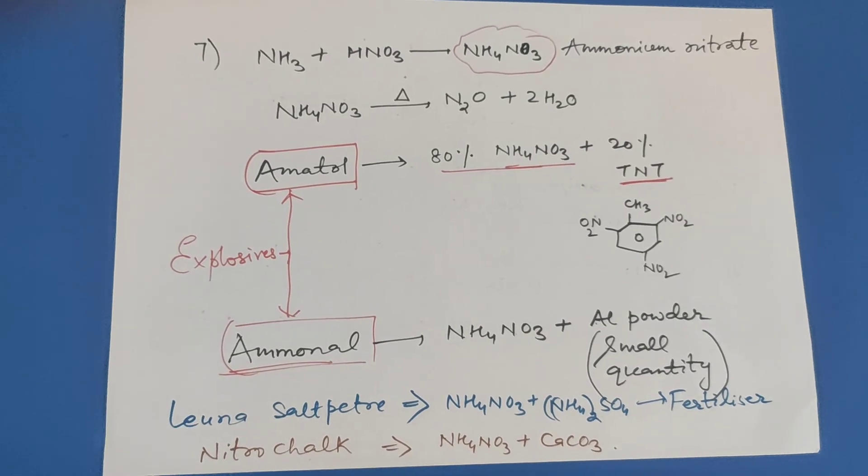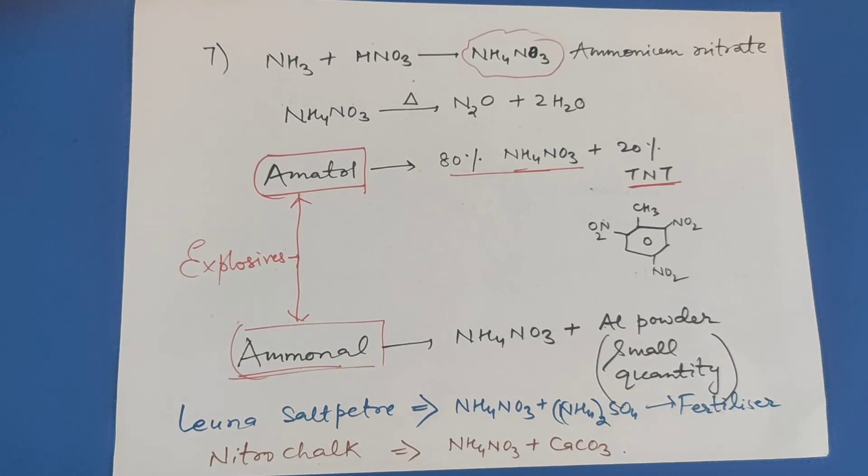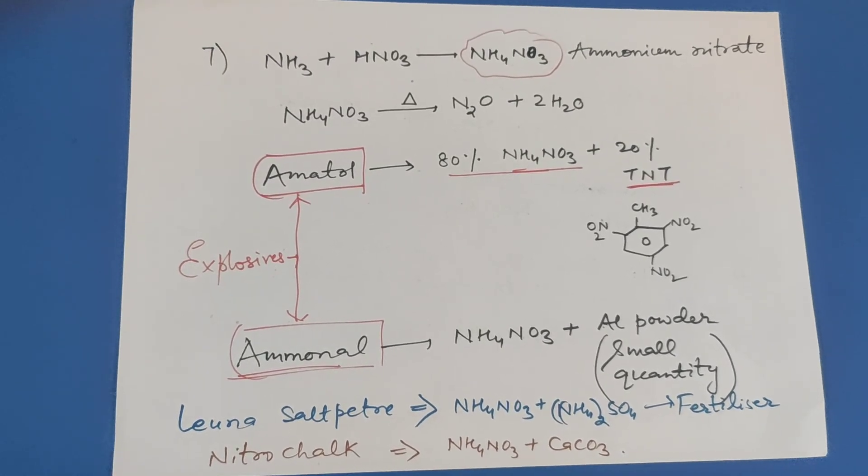Now Amatol and Ammonol. These are explosives. Amatol is 80% ammonium nitrate mixed with 20% TNT, that is trinitrotoluene.